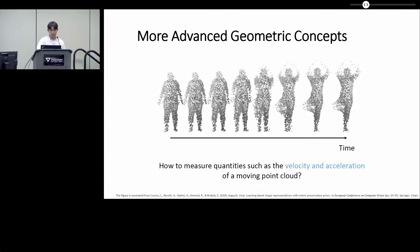For example, we may want to measure how quickly the point cloud shape is changing in a moving point cloud. In other words, we may want to measure quantities such as the velocity and acceleration of a moving point cloud. The primary goal of our work is to formulate and quantify these concepts in a coordinate invariant and geometrically meaningful way.